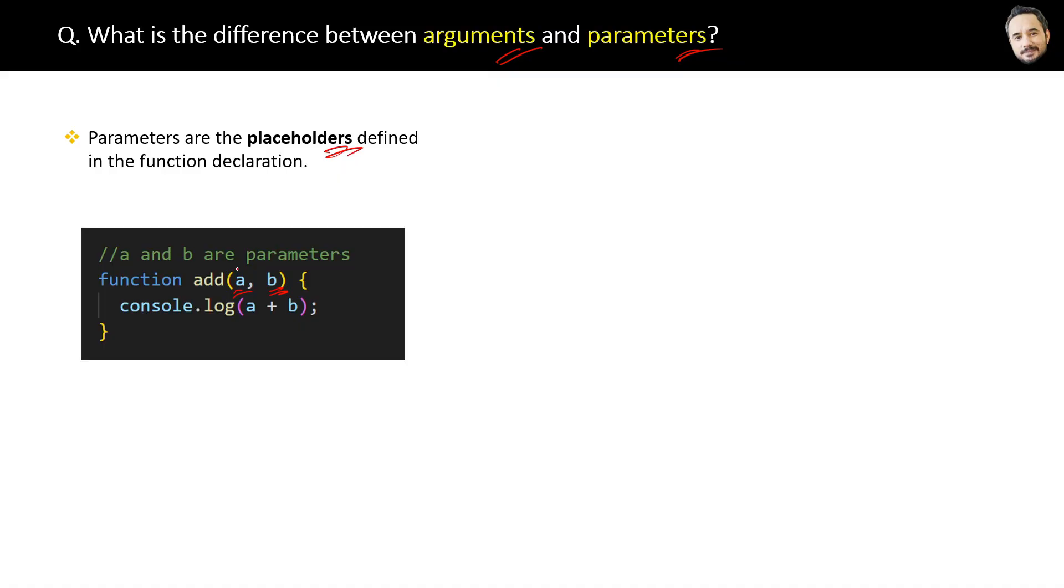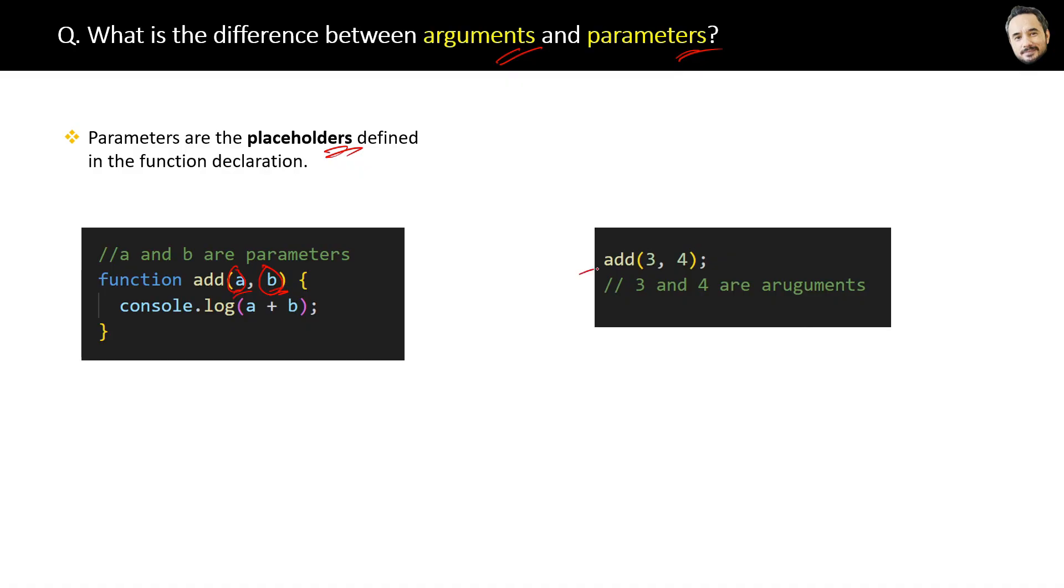Like this. Okay, then this is how we can call the add method, right? And while calling the method, the actual values we are passing, 3 and 4, those are arguments. So the answer is: